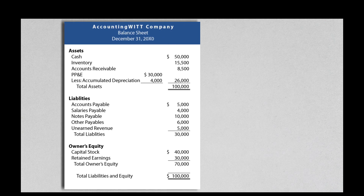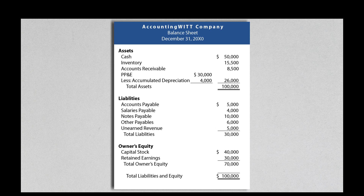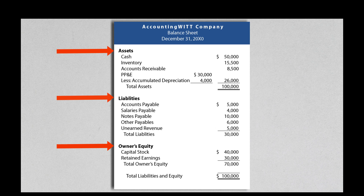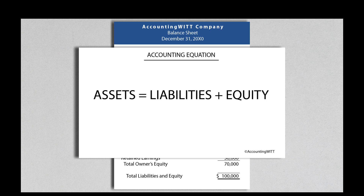The balance sheet, sometimes referred to as the statement of financial position, provides the users of the financial statements a snapshot of the company's financial position as of a specific date and time. The balance sheet shows the general categories of accounts: assets, liabilities, and equity. These three categories constitute what is known as the accounting equation, which is assets equals liabilities plus owner's equity.